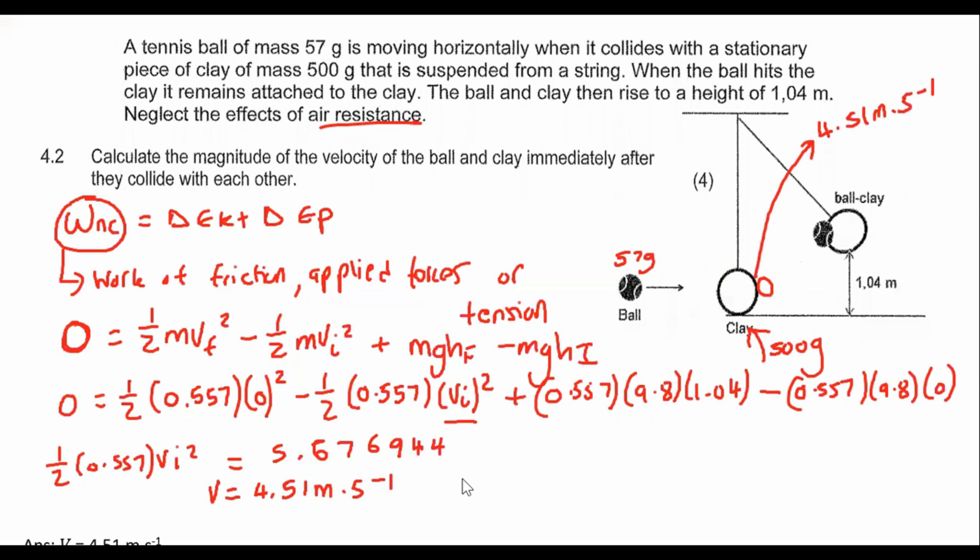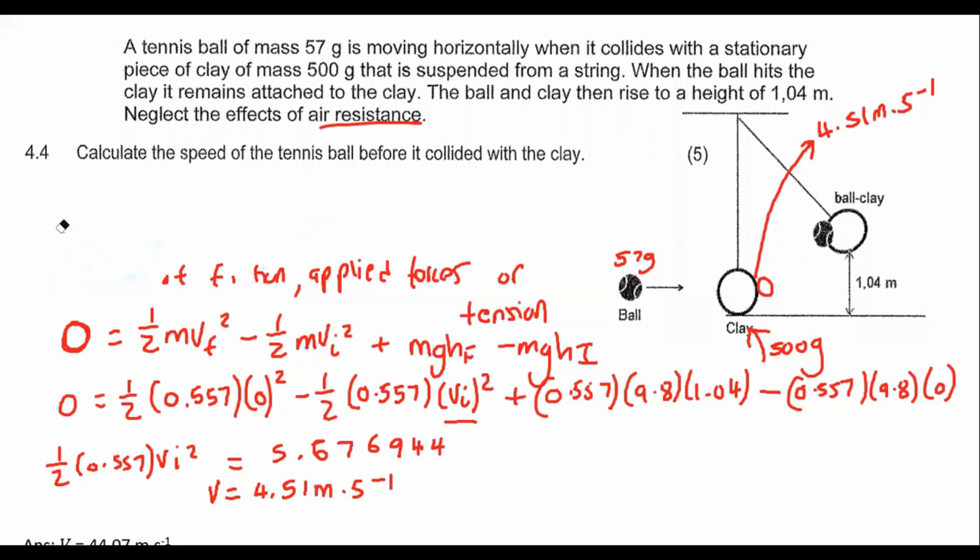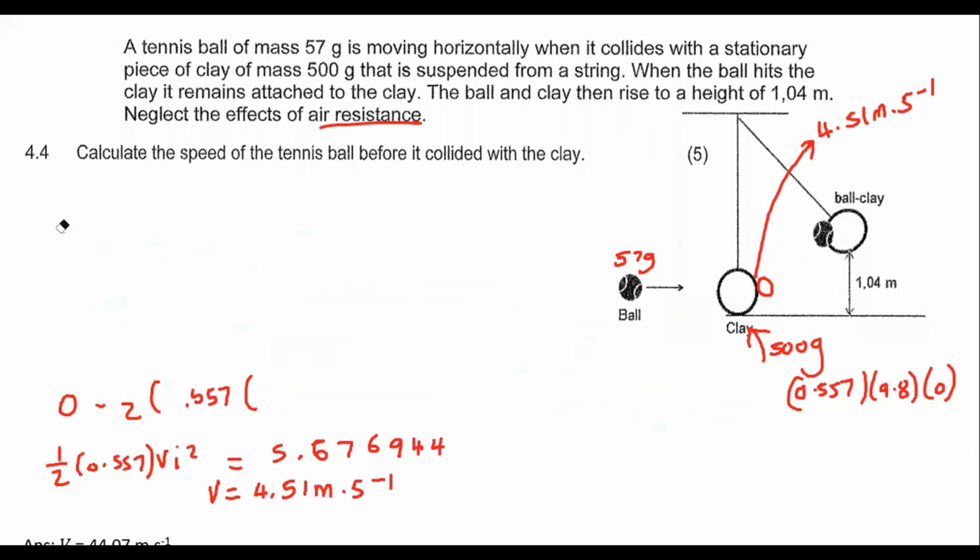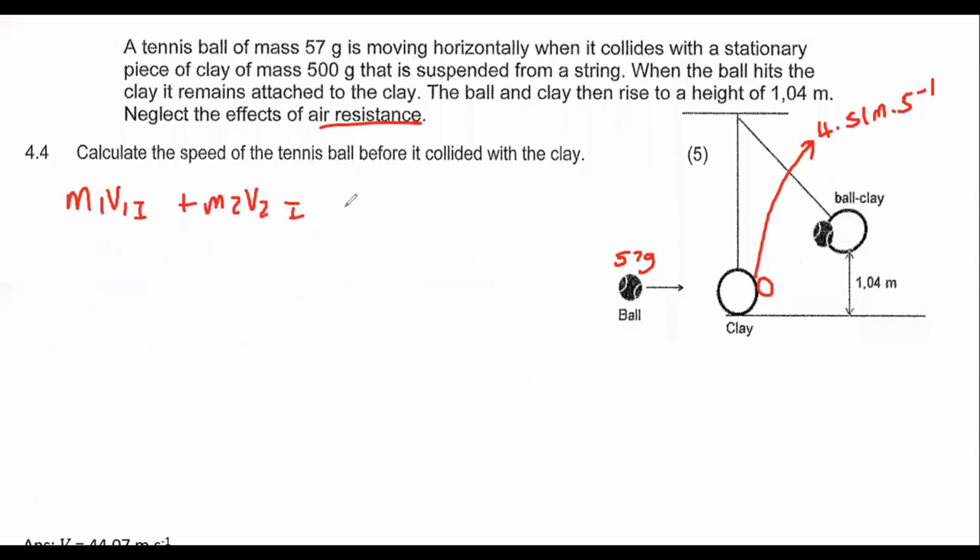The next question is the same problem, but now what they want is to calculate the speed of the tennis ball before it collided with the clay. Now we can use the conservation of linear momentum because we have extra information. In the previous question, we calculated what their velocity will be after they collide, so we can use the conservation of momentum formula now.